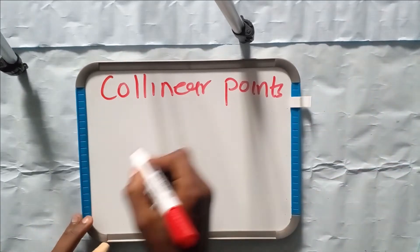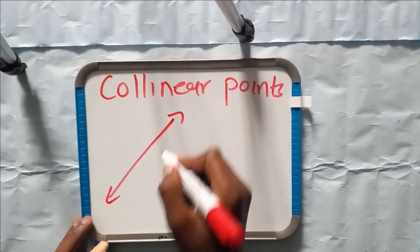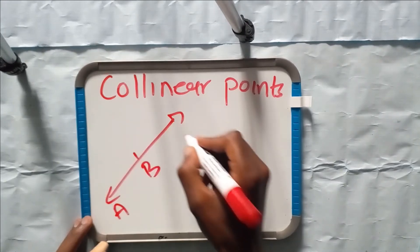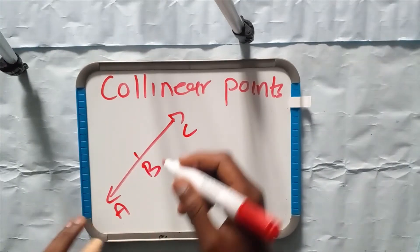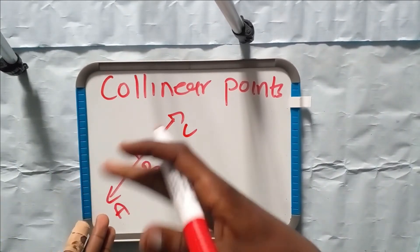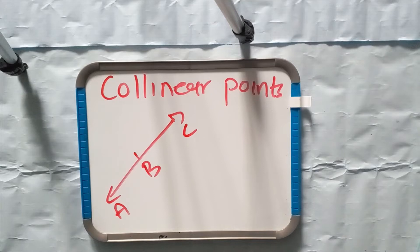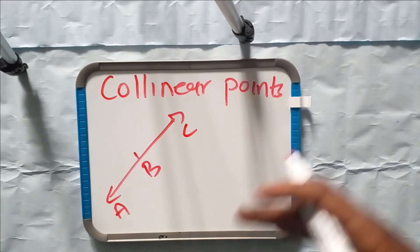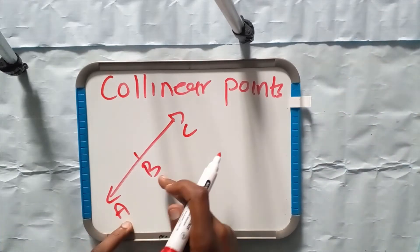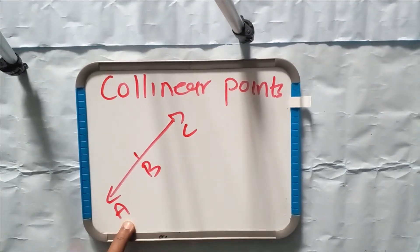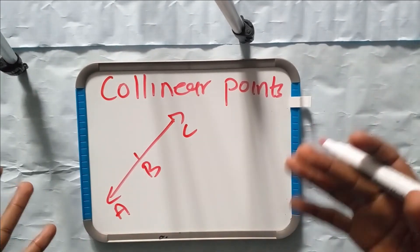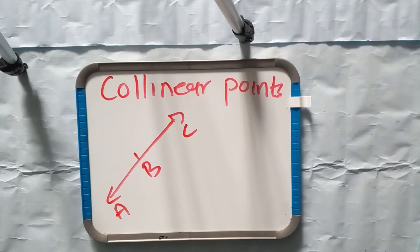For example, let's look at the following line. If we have point A here, point B here, and point C here, we can say all three points are collinear because they are on the same straight line. What you must know about collinear points is that their gradients are the same across the line, which means the gradient of AB is equal to the gradient of BC.